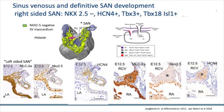Important for sinus node development is all these expression patterns. The sinus venosus in blue and the NKX2.5-negative myocardium in lime green is in contrast to the atrial working myocardium. The sinus venosus is NKX2.5-negative and expresses HCN4, TBX3, and TBX18. In this mouse heart you can see that also on the left there appears to be a small sinus node that is NKX2.5-negative and HCN4-positive, while on the right side an already quite dominant right-sided sinus node is visible.